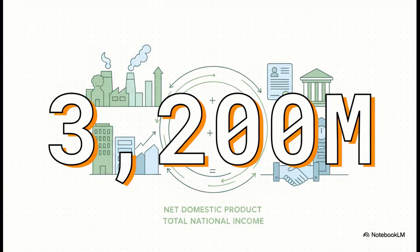Here's the first big aha moment. That number, $3,200, is also the total national income. Think about it — every single dollar of value that's produced has to go somewhere. It ends up as income for someone, either as wages for an employee or profits for a company owner. Product and income are literally two sides of the very same coin.